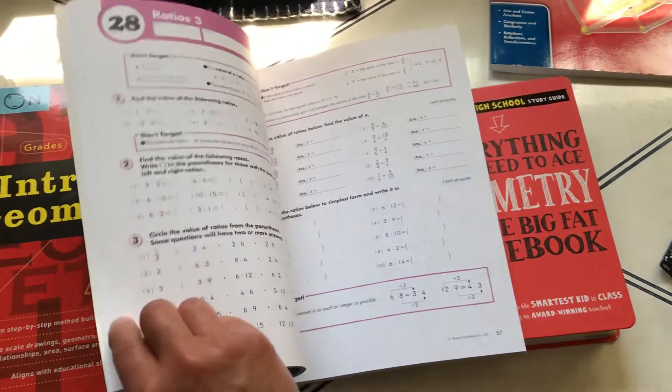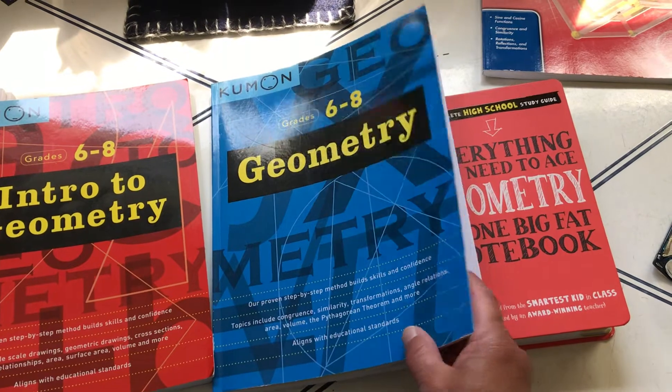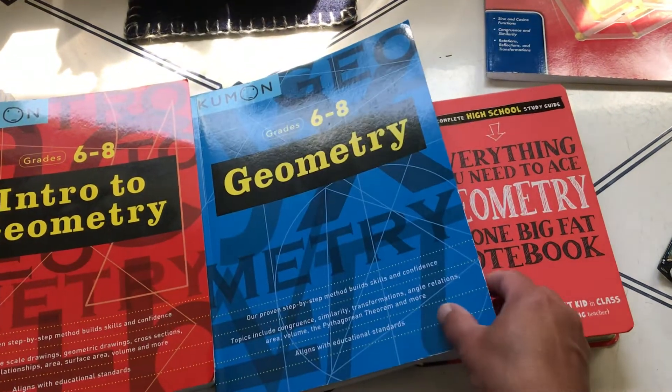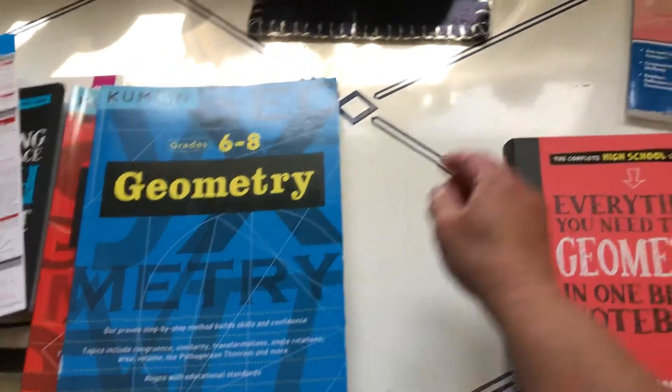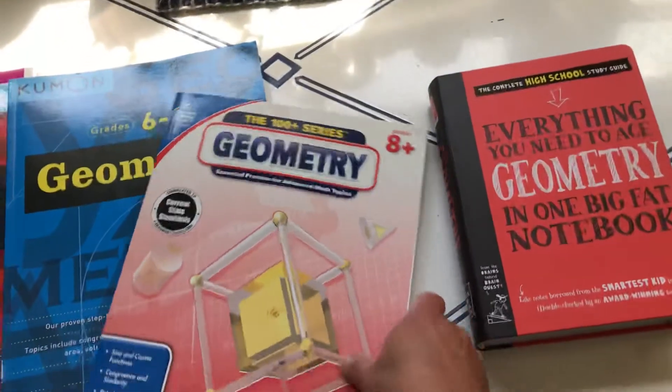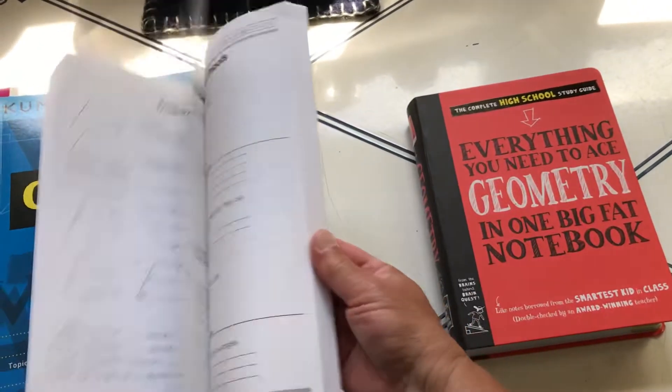Anyways, yeah, so I really like these Kumon books. I know it says grades six through eight, but like I said before, I think they're known for being advanced. And so in my mind they look awfully similar to this one, which states it's grade eight plus, which is high school.